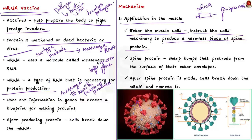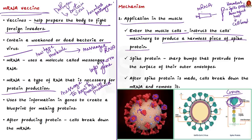If you don't know what a spike protein is: members of the coronavirus family have sharp bumps that protrude from the surface of their outer envelopes — these bumps are known as spike proteins, visible in the image shown here. These spiked proteins give the viruses their name; under the microscope, these spikes appear like a fringe or crown — and interestingly, in Latin, 'corona' means crown. Spike proteins play an important role in how these viruses infect their host. After the harmless spike protein is made, the cells break down the mRNA and remove it.